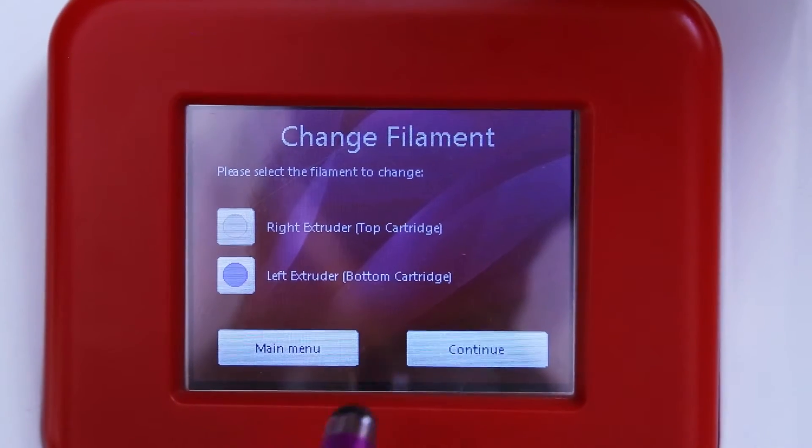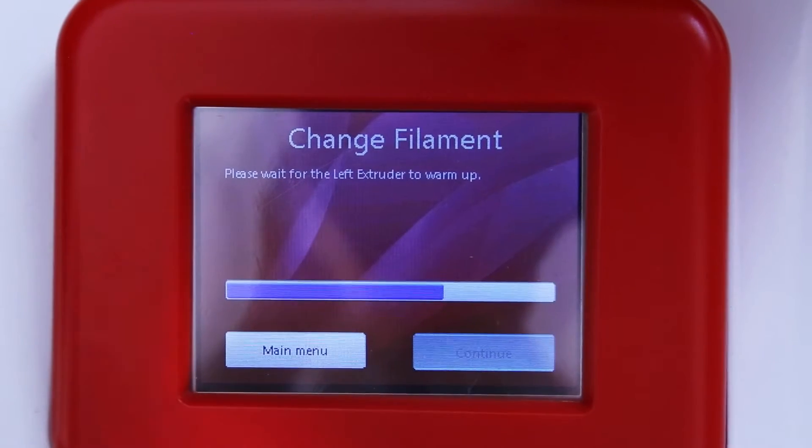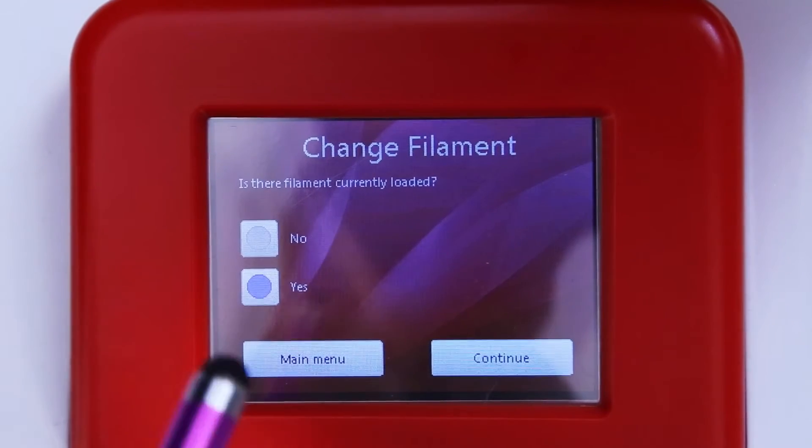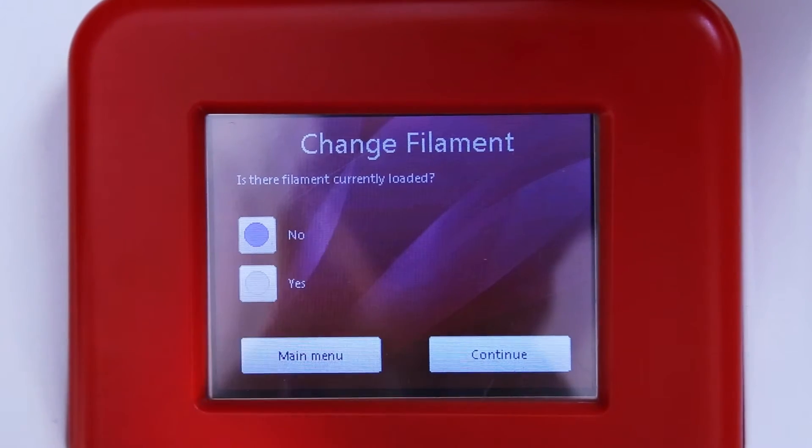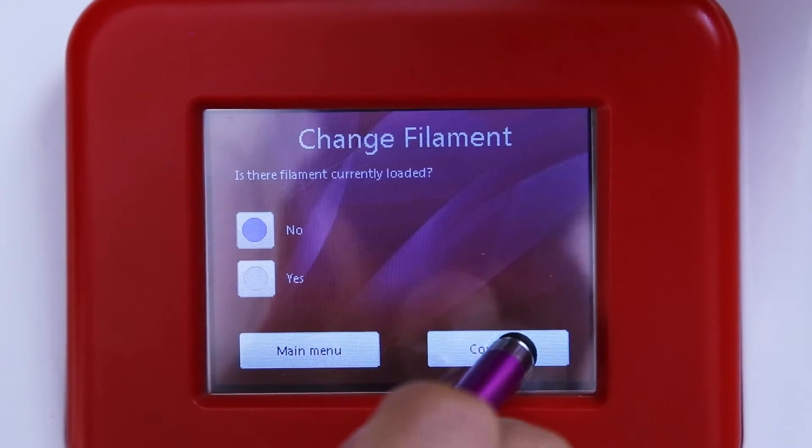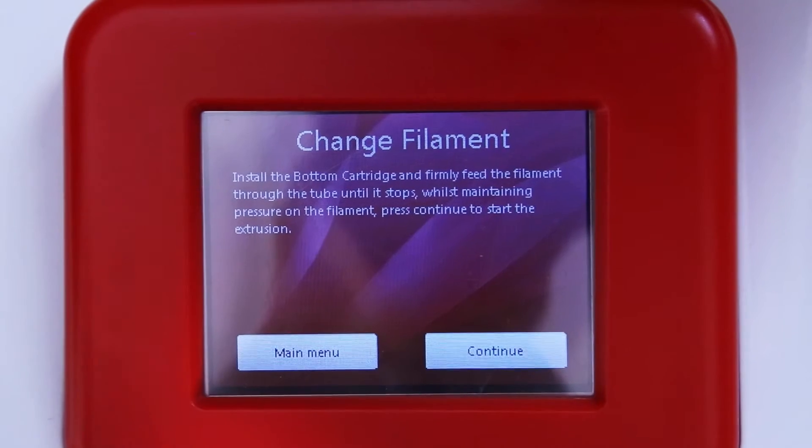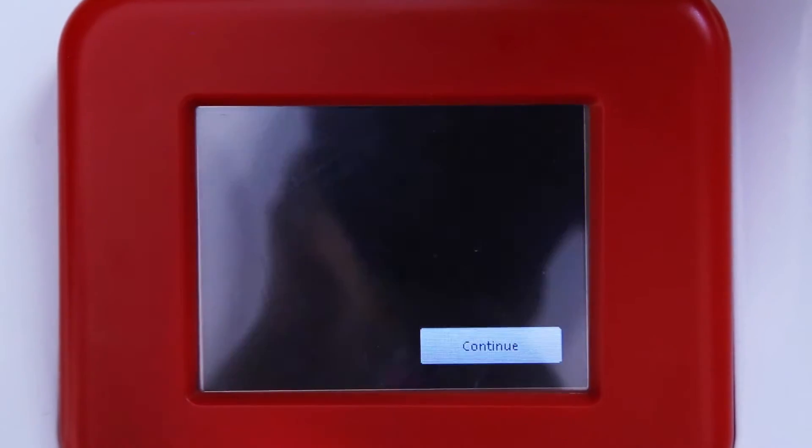Check the extrusion is working correctly by following the change filament process and selecting no when asked if the filament is currently loaded. If you see it extruded in a straight line, then your blockage has been cleared and you can continue printing.